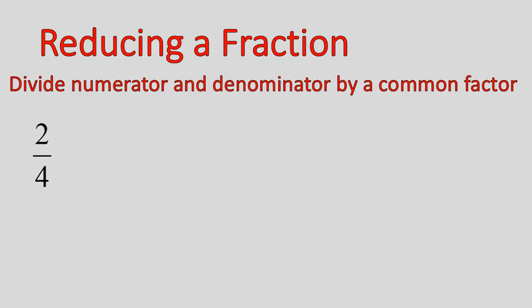For this, I'm just going to go ahead and give you a factor. They have a factor of 2. Both of these numbers have a factor of 2. So we'll go ahead and say I'm going to divide the numerator and denominator by 2, and that reduces down to 1 half.